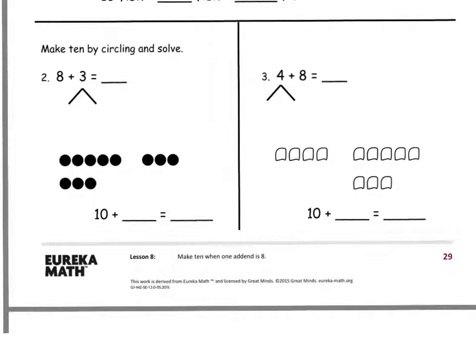When you're done with number 1, you can go down to number 2. Make 10 by circling and solve. For number 2, we have a picture to go with our number sentence of 8 plus 3.